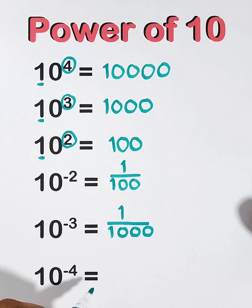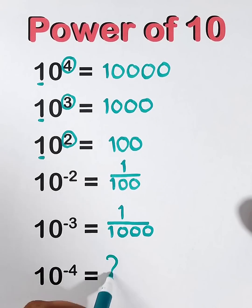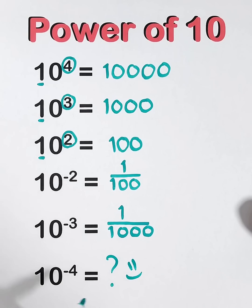And the answer is 1 over 1,000. Now guys, it's your turn to find the answer for 10 raised to negative 4. Follow for more.